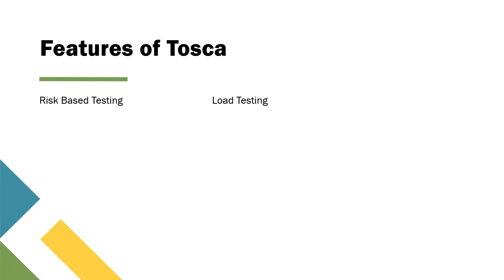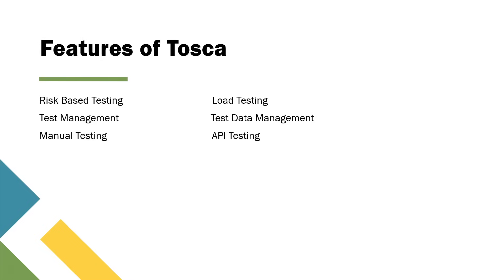Tosca provides risk-based testing, which means you can track your requirements based on risk weightage. You can also perform load testing on your applications. You can perform all the activities that are part of test management — like defining requirements, tracking requirements, and performing risk analysis. You can also manage your test data in different databases, either external or on the same database. Tosca also supports manual testing, exploratory testing, and API testing.